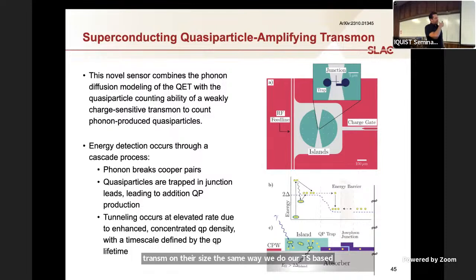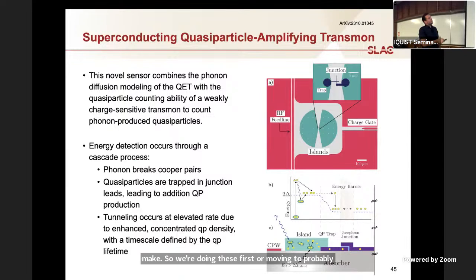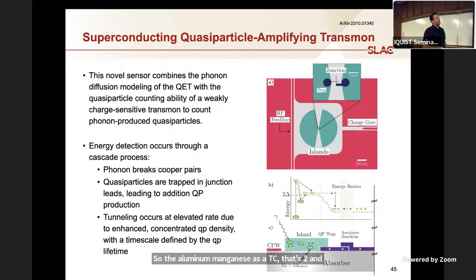They're sized the same way we do our TES-based phonon absorbers. Now the trap, instead of being a TES, the trap actually consists of a junction with the two launch pads you need when you do this style of junction. In this device, it's a Manhattan-style junction. These are sort of the easiest junctions to make. So we're doing these first, we're moving to probably Dolan junctions in a year, but the real trick is making the islands out of aluminum and then making the actual junction out of aluminum manganese. The aluminum manganese has a TC that's tunable, but can be in the 100 to 200 millikelvin ballpark pretty easily. You still get this cascade where you have diffusion in the aluminum trapping in the aluminum manganese.